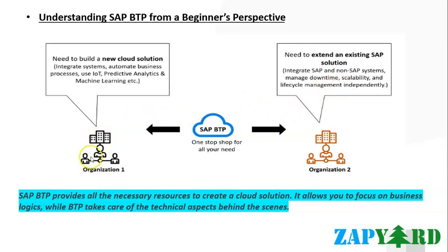So in both scenarios — that is, either organization one or organization two — organizations want to build solutions with minimal effort, low cost, and faster time to market. Because nobody wants to delay solutions and customers don't want to spend money and time on things like landscape setup, system installation, configuration, and maintenance. So in both cases, this is where SAP BTP comes into picture, as the ecosystem we talked about.